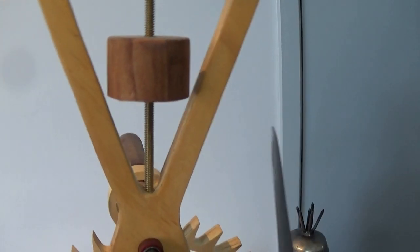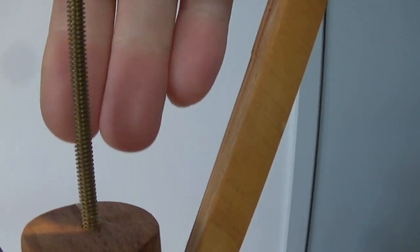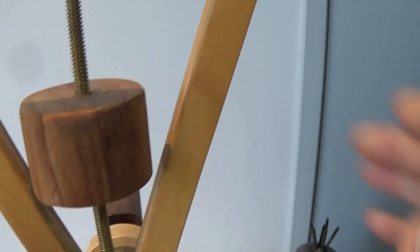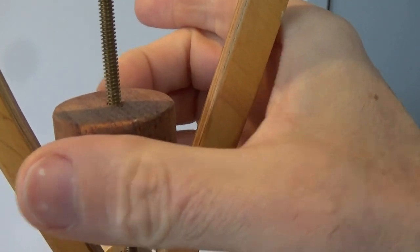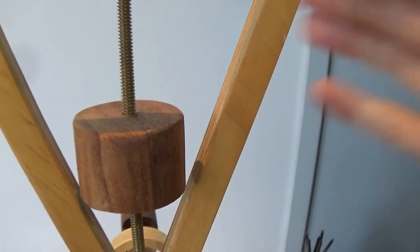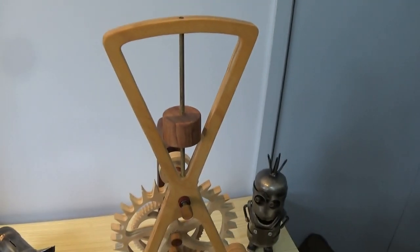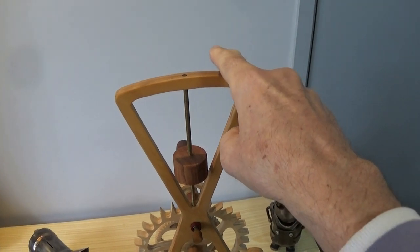While the gearing and the length of the pendulum define mostly the speed of the clock, there's fine adjustment here by moving this weight up and down to finely adjust the pendulum to get the clock to run accurately.